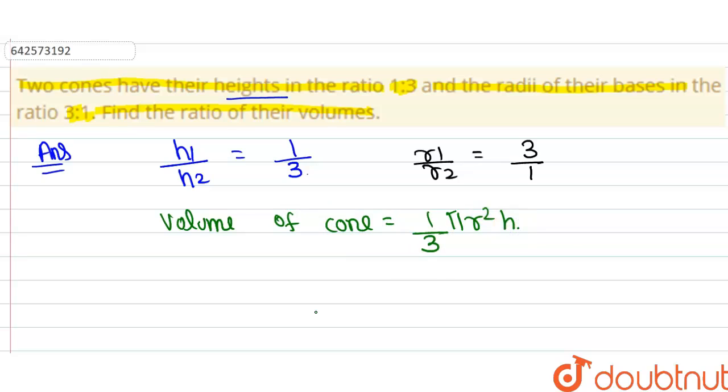Now let's say v1 is the volume for cone 1 and v2 is the volume for cone 2.